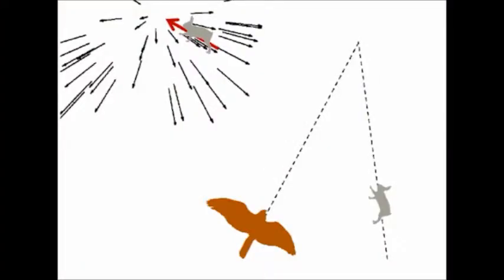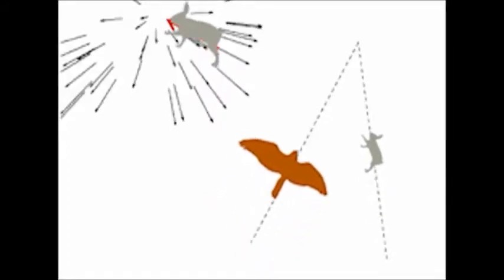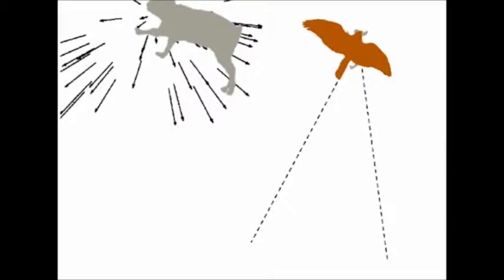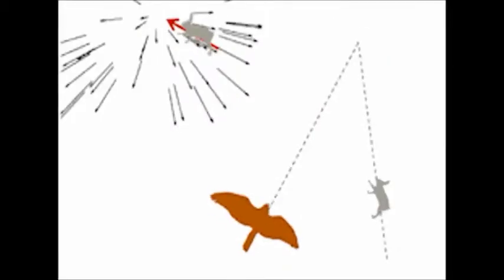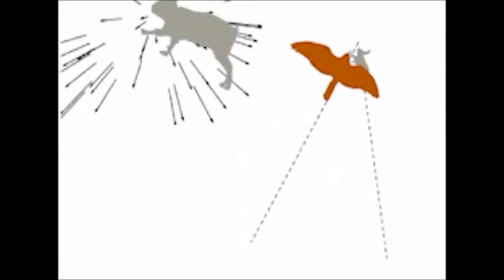More generally, when the prey fled at an angle, the goshawk used constant absolute target direction, or CATD, a form of motion camouflage, in which it follows the fastest interception trajectory while maintaining the prey's image on screen at a constant non-zero visual angle.